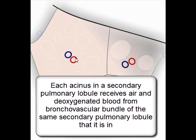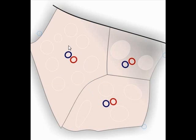The blood from these capillaries, after absorbing oxygen, is collected by venules. These venules join together to form bigger veins that run between the septa, and finally the oxygenated blood is taken to the left atrium of the heart, from where it is supplied to the whole body.